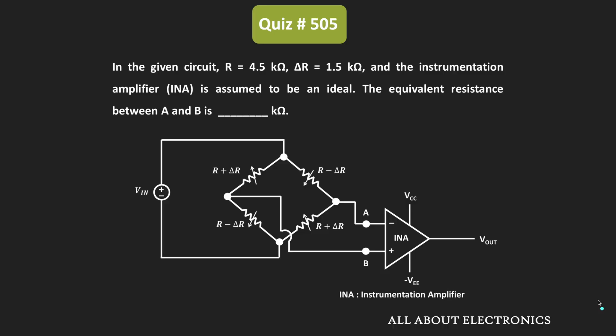Hey friends, welcome to the YouTube channel All About Electronics. In this question, we have been given an instrumentation amplifier based circuit. We have been given that the value of R is equal to 4.5 kilo ohm, while the value of Δr is equal to 1.5 kilo ohm.